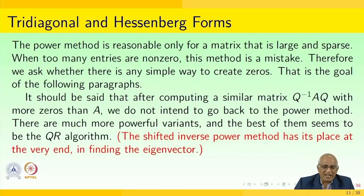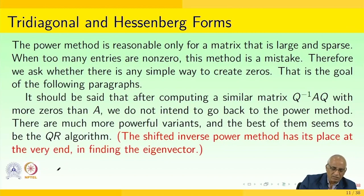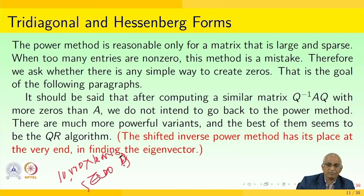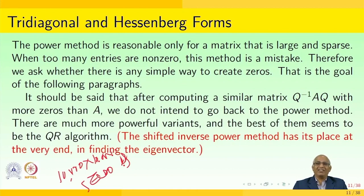Looking at tridiagonal and Hessenberg forms: the power method is reasonable only for matrices that are large and sparse — meaning very large size such as 10,000 × 10,000 with zeros dominant. When too many entries are non-zero, this method is not desirable. Therefore we ask whether there is a simple way to create zeros.